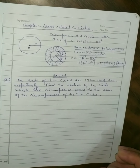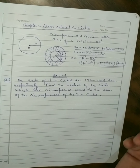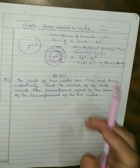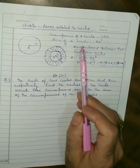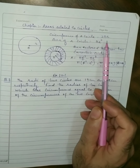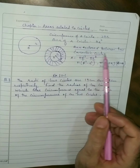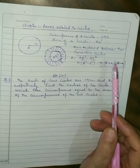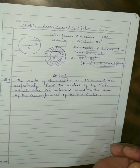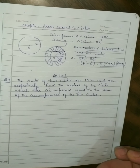You have to solve the questions of Exercise 12.1, which is based on these formulas: circumference, area, and area enclosed between two concentric circles. Now we will start Exercise 12.1.